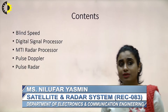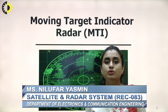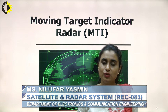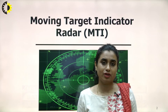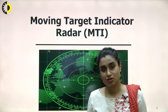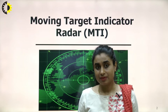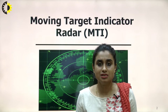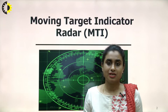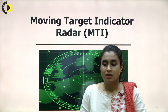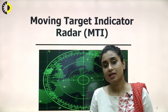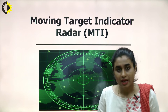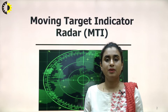Radar is an acronym used for radio detection and ranging. So radar is a technology that we use to detect the presence of an object in our territory. Here the object is called as target. Detection means finding the presence of that object and range calculation means the distance of the target from the transmitting end.